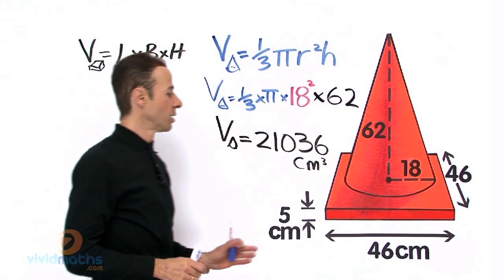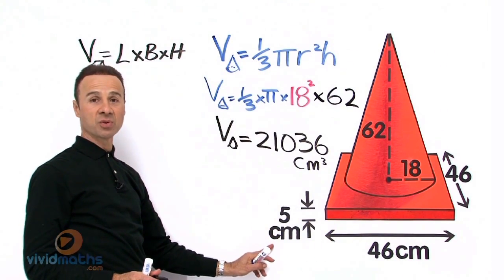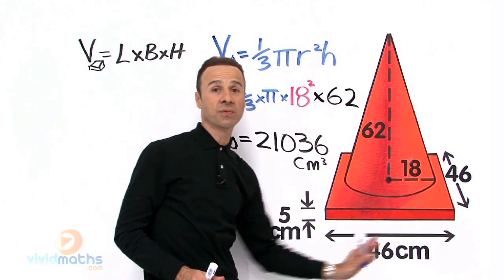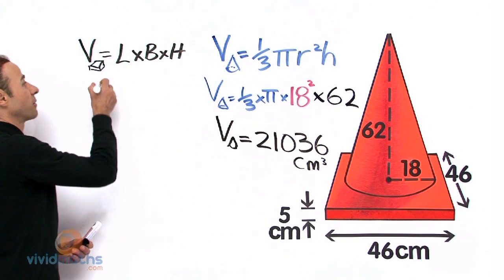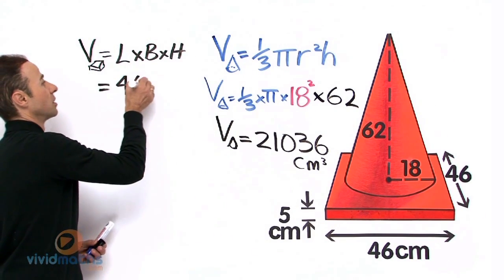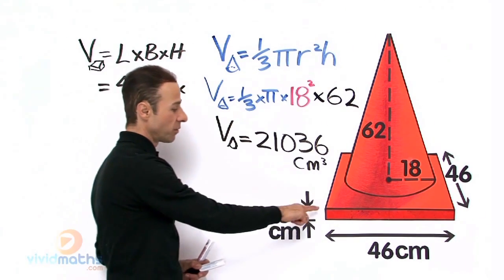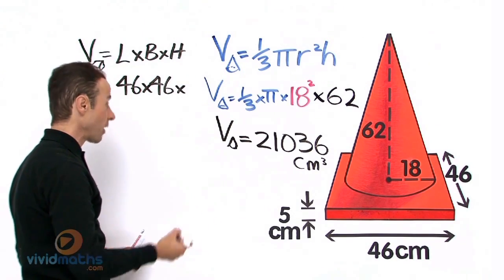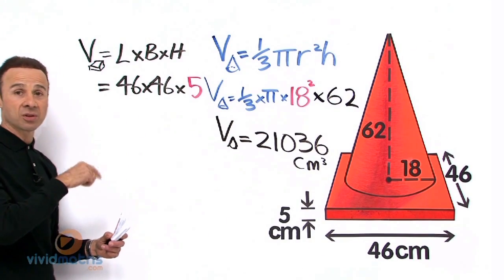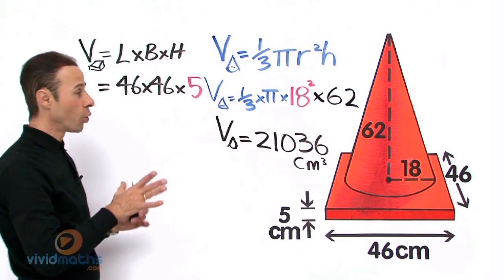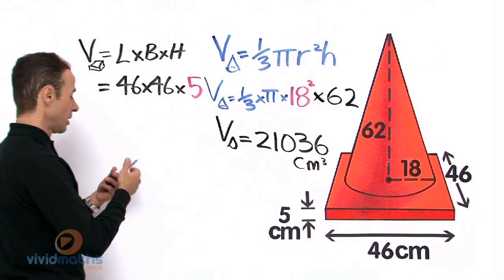So we have length times breadth times height. The height of the base is 5 centimeters right over there. It is a square base — 46 by 46 — with a depth of 46. So let us plug those into the formula: 46 times 46 times 5. That gives us the entire volume for that rectangular prism base.